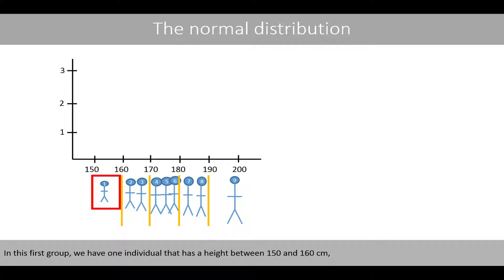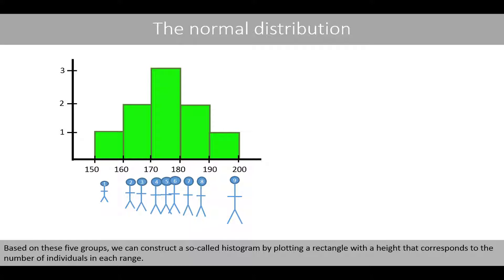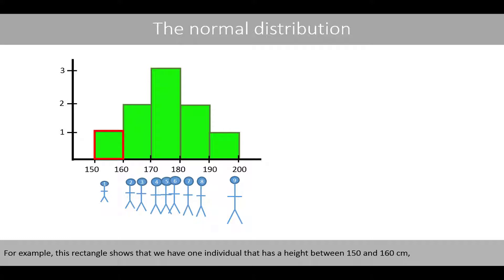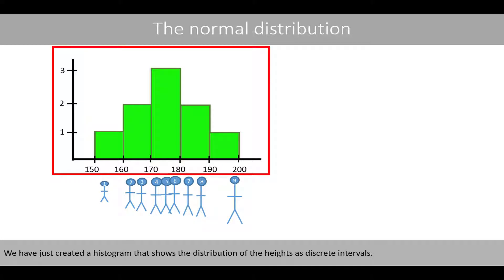Let's make 5 groups based on their heights. In the first group, we have one individual with a height between 150 and 160 centimeters. In the second group, we have two individuals with a height between 160 and 170 centimeters, and so forth. Based on these five groups, we can construct a histogram by plotting a rectangle with a height corresponding to the number of individuals in each range. We have three individuals in the range 170 to 180, two in the range 180 to 190, and only one in the range 190 to 200. We have created a histogram showing the distribution of heights as discrete intervals.